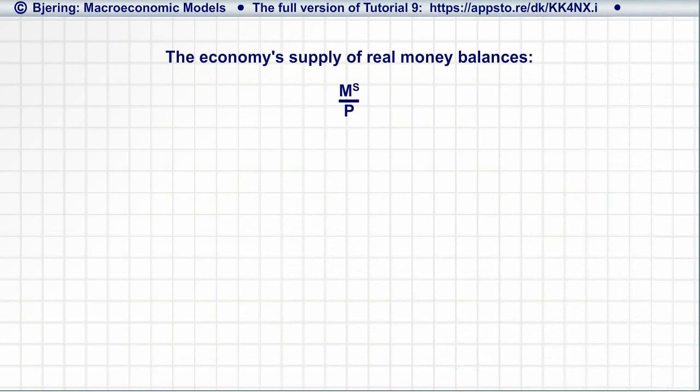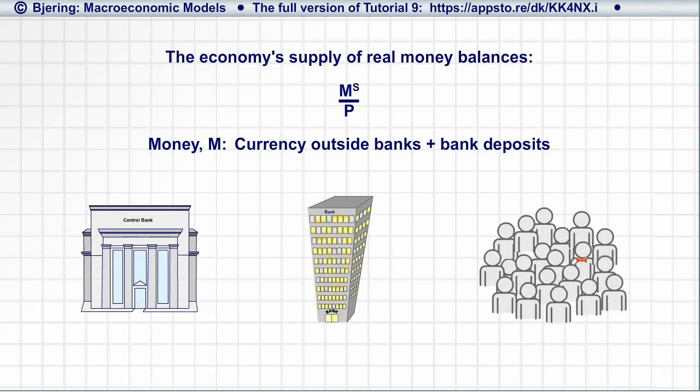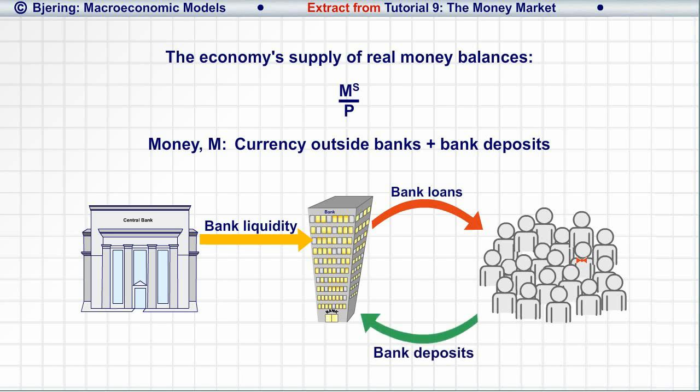Recall from tutorial 7 that money is the sum of currency outside banks and people's bank deposits. Recall also that the main channel through which the central bank supplies money to the economy is via supplying commercial banks with bank liquidity in the form of currency. Currency that the banks lend to the public starts a money multiplier process that generates an increase in people's holdings of currency and bank deposits, that is, in people's money holdings.